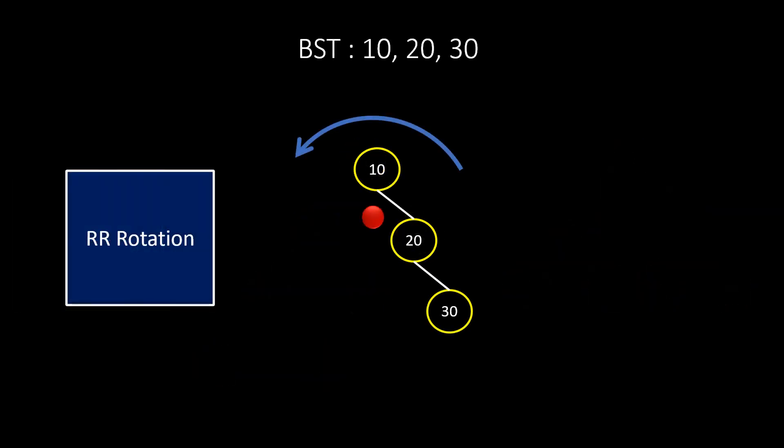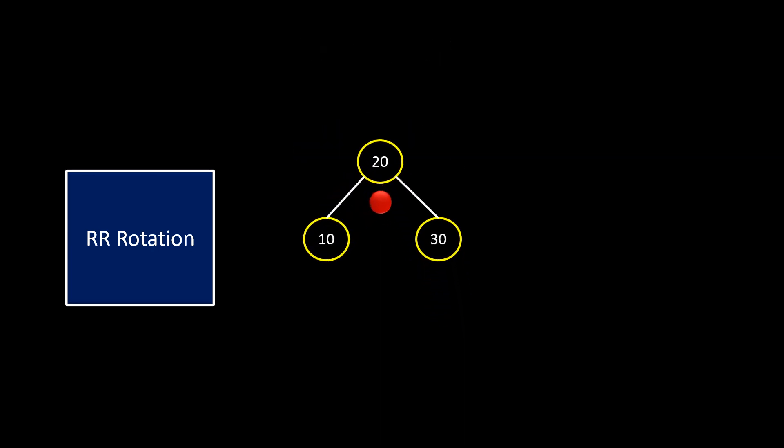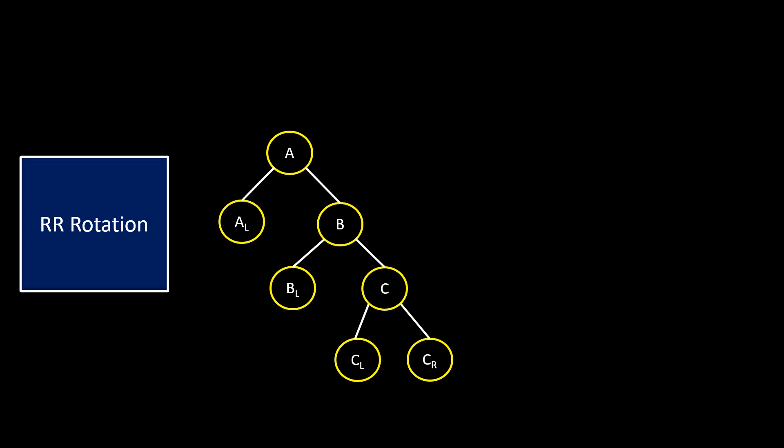Now, let's see the same in a bigger tree. Consider this tree and here the imbalance occurs at A after inserting at right of right. So, we take these 3 nodes into consideration and fix a nail here and pull the string towards left. The 3 nodes get rotated as this.